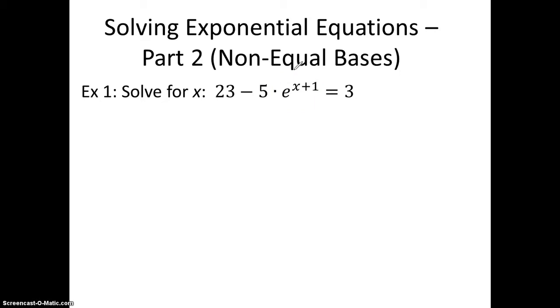So the way we do that is we're going to subtract 23 from both sides. And we're going to get negative 5 times e to the x plus 1 equals negative 20. We're going to divide both sides by negative 5. Then we're going to get e to the x plus 1 equals 4.